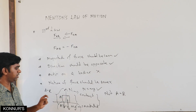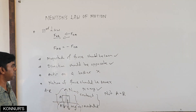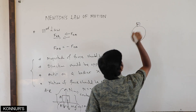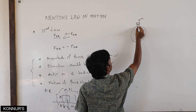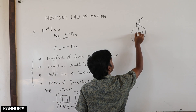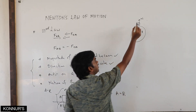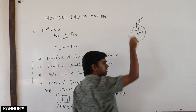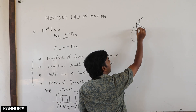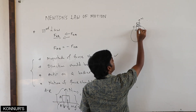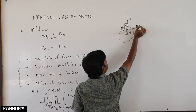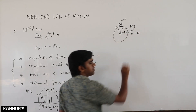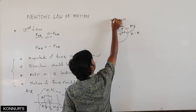The actual action-reaction pairs here are: the normal force by the surface on the body paired with the normal force by the body on the surface — these two form an action-reaction pair. And the gravitational force on the body by earth paired with the gravitational force on earth by the body — these two form another action-reaction pair.